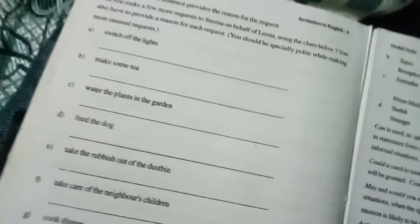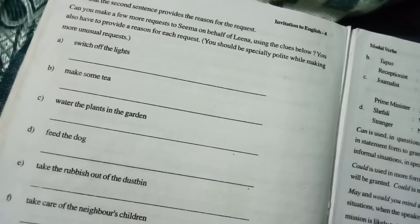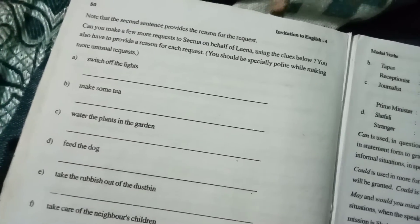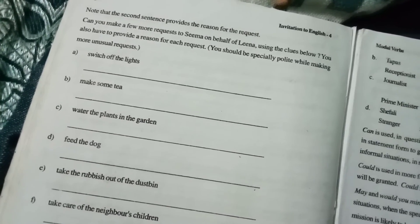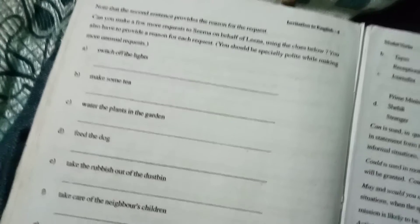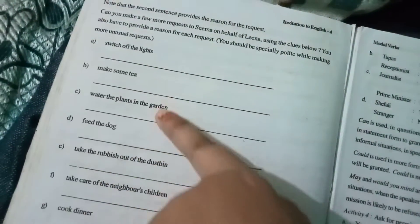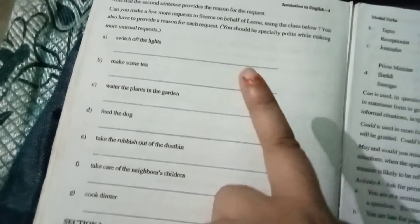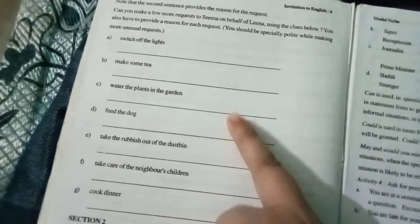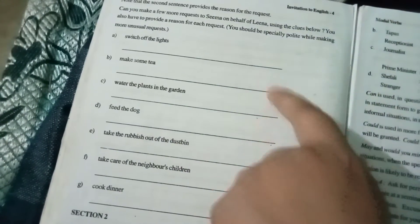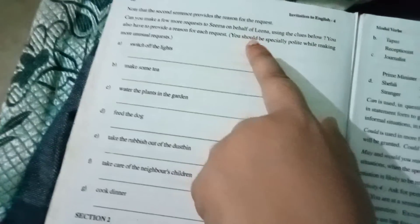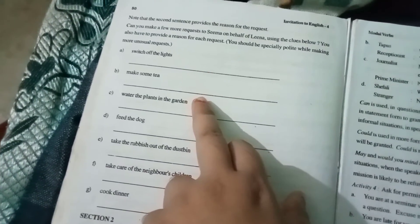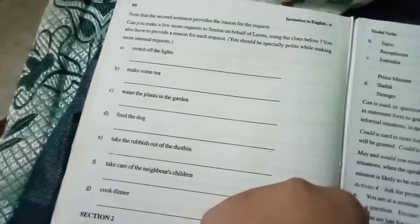When we are making unusual requests at that time you should be more polite. More polite means the modals we can use are could and would. These are more polite when we are making requests. Following to this you have some situations given, and by following these situations you have to make requests to Sima on behalf of Lena.